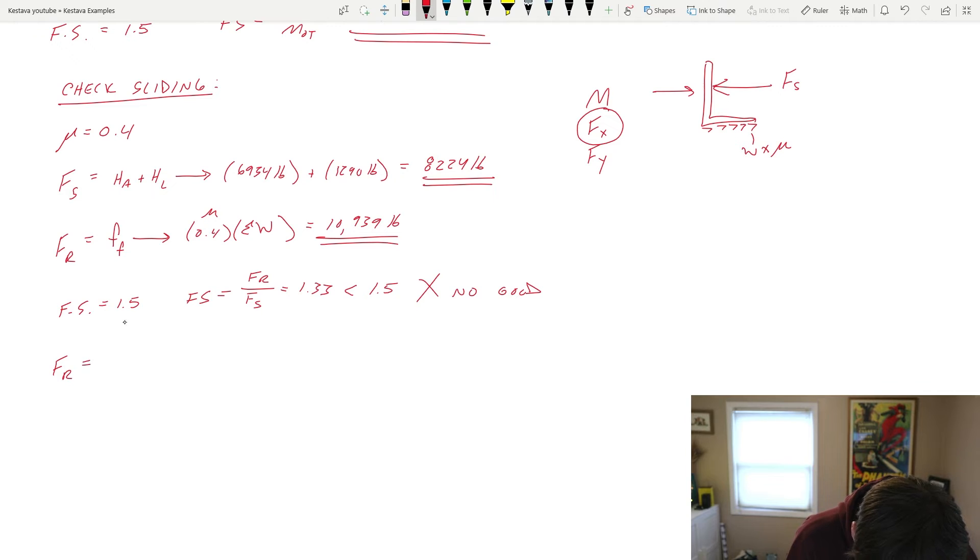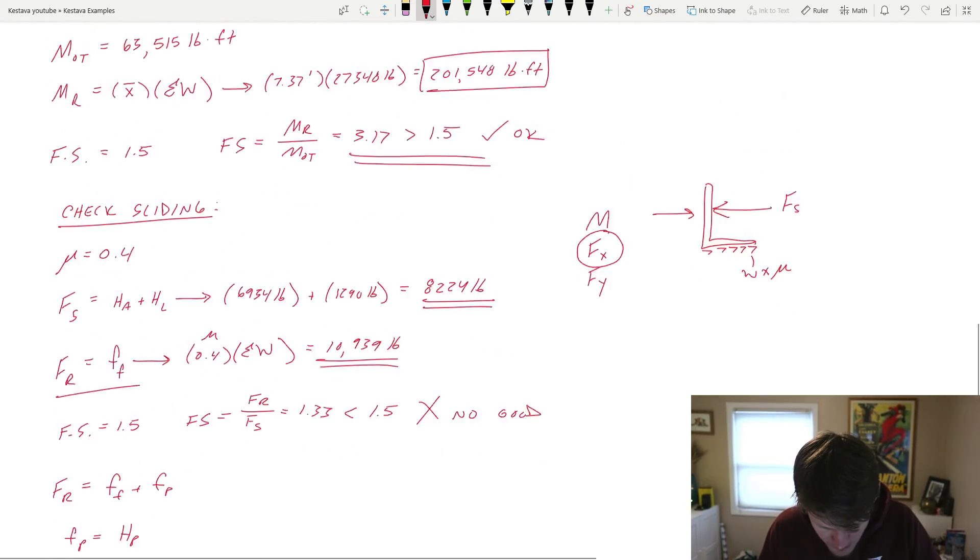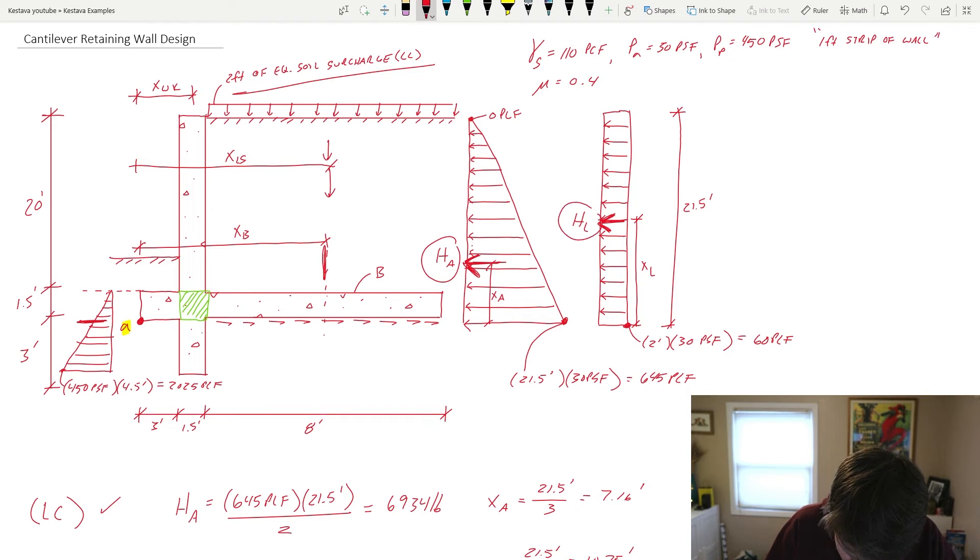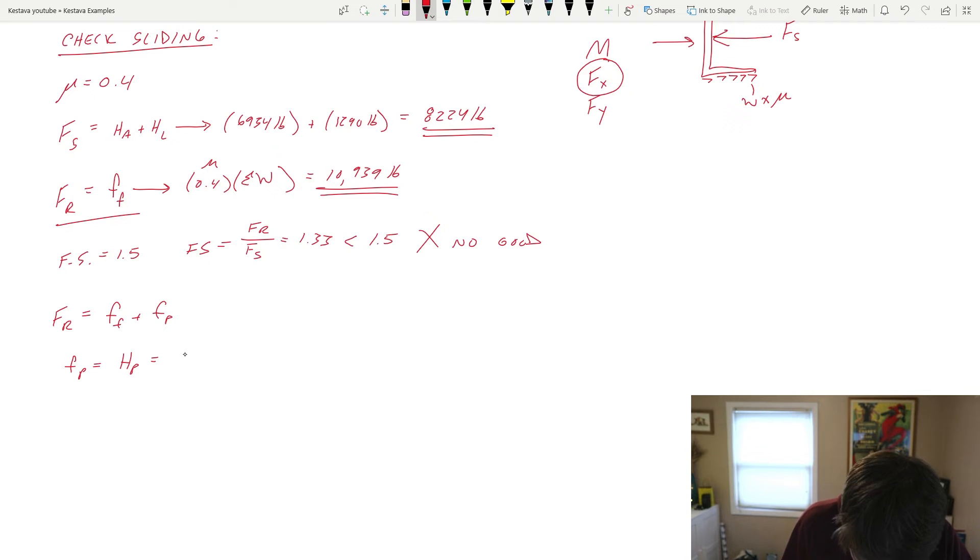So FR, we're going to rewrite our equation from this one up above is equal to force of friction plus also force passive. Force passive is equal to big HP. Just like if we scroll back up here, we solve for big HA and big HL. Well, we also have big HP, which is the sum of that distributed load down there. Big HP is equal to the following. It's the triangular distribution. So we divide by two and that gets us 4,556 pounds.